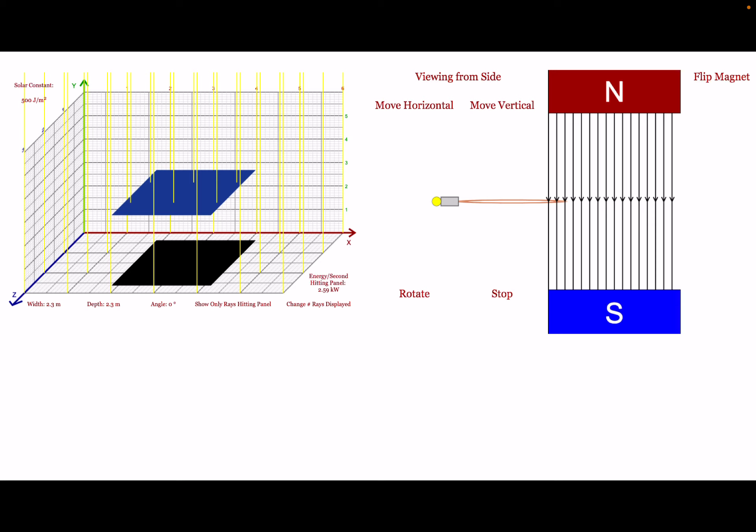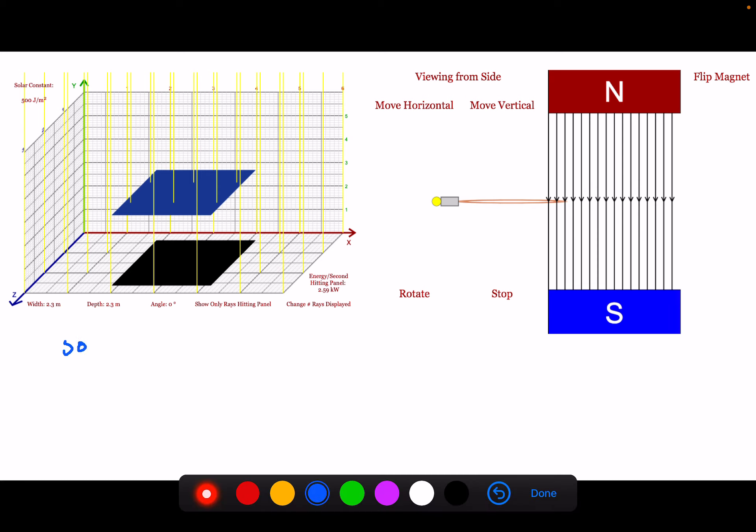The big thing we want to take away from the last lesson was the idea of flux. We looked at it in terms of solar flux, because I think that's easy to understand. The solar flux was the amount of energy being absorbed by the solar panel. The way that we've calculated this was by multiplying the area times the solar constant times the cosine of our angle.